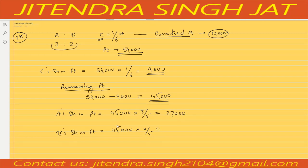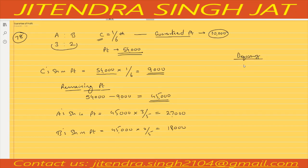So A gets 27,000 and B gets 18,000. Now C must get 10,000 but C is only getting 9,000 according to the calculation. The deficiency is 10,000 minus 9,000, which equals 1,000.